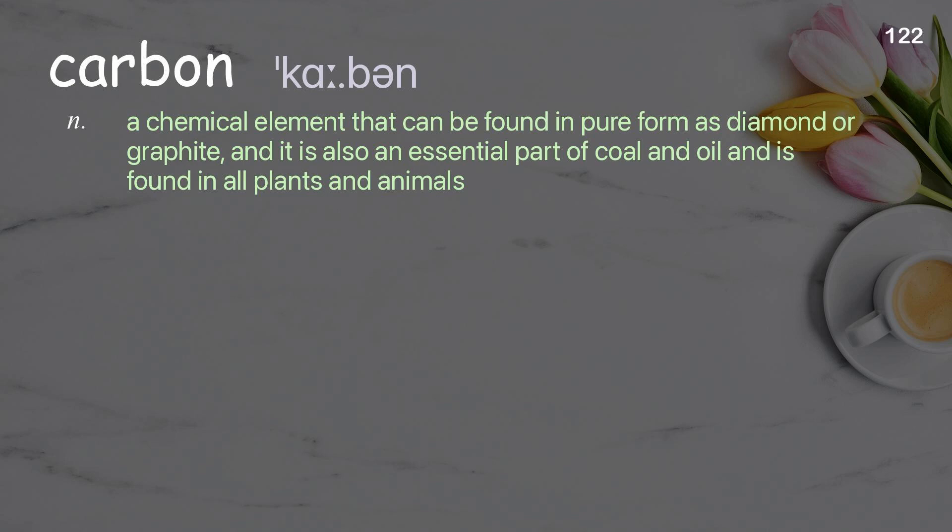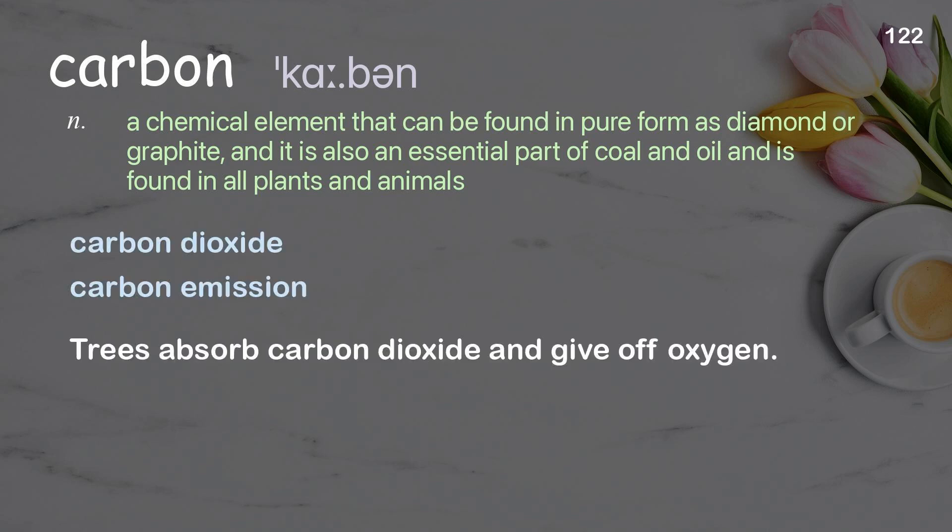Carbon: a chemical element that can be found in pure form as diamond or graphite, and is also an essential part of coal and oil and is found in all plants and animals. Examples: carbon dioxide, carbon emission. Trees absorb carbon dioxide and give off oxygen.